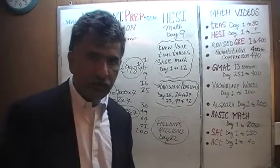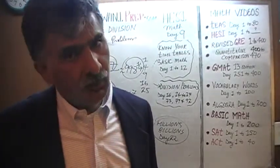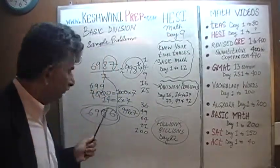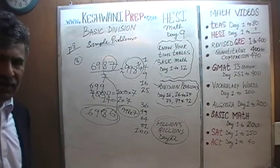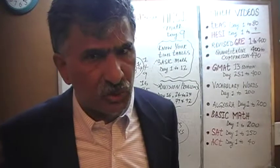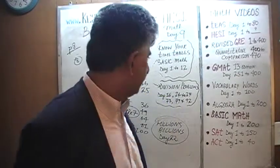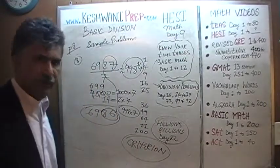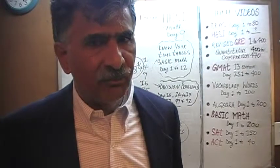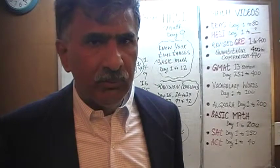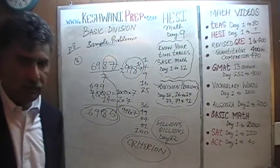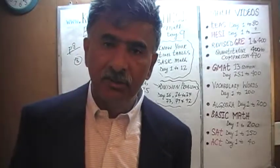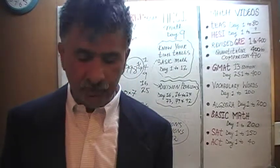If you want to do the actual long division: 6 has no 7s, so 6 joins 9 to make 69; 69 has nine 7s (9×7=63), remainder 6. That 6 joins 8 to make 68; 68 has nine 7s (9×7=63), remainder 5. That 5 joins 7 to make 57; 57 has eight 7s (8×7=56), remainder 1. Answer: 998 and one-seventh — exactly as estimated. In the real exam the approximation method is faster and sufficient; only one answer choice will be slightly under 1,000.